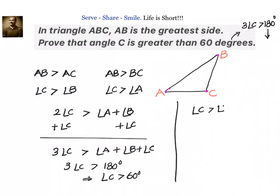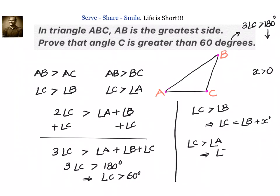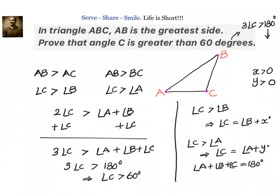We can do this in another way also. We know that angle C is greater than angle B, so let us write angle C equals angle B plus some value X, where X is greater than 0. Similarly, we know angle C is greater than angle A, so we can write angle C equals angle A plus some value Y degrees, where Y is greater than 0. Now, in a triangle, all the angles add up to 180, so we write angle A plus angle B plus angle C equals 180 degrees.